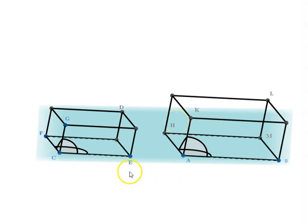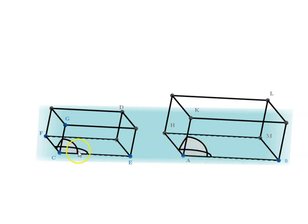Let's look at parallelogram FE. The bottom one is similar to PH because CE is to CF as AB is to AH, and the angle between them is equal. So parallelogram FE is similar to parallelogram BH. Thus the side face, the front face, and the bottom face are similar in both solids.